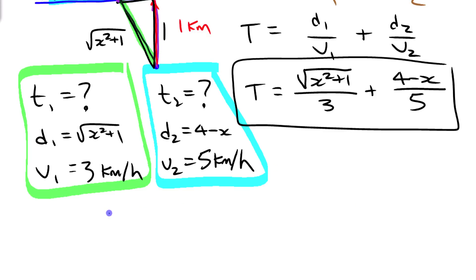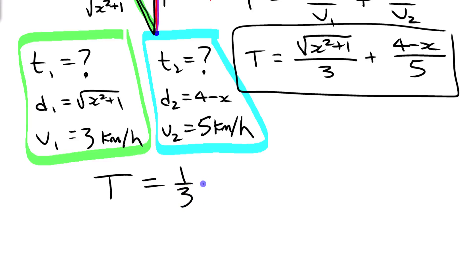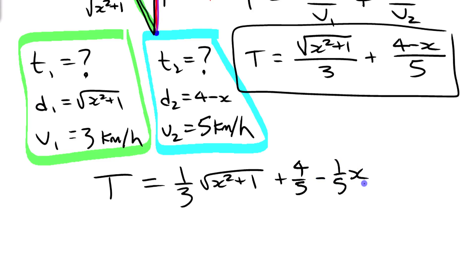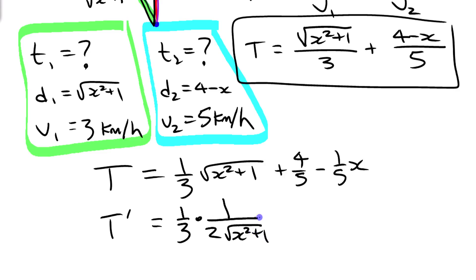I'm going to slightly rewrite this function before finding the derivative. Instead of √(x² + 1)/3, I'll write it as (1/3)√(x² + 1), and instead of (4 − x)/5, I'll write it as 4/5 − (1/5)x. Then the derivative: for the first part, (1/3) times (1/(2√(x² + 1))) times 2x by the chain rule. The derivative of the constant term is zero, and the derivative of −(1/5)x is just −1/5.